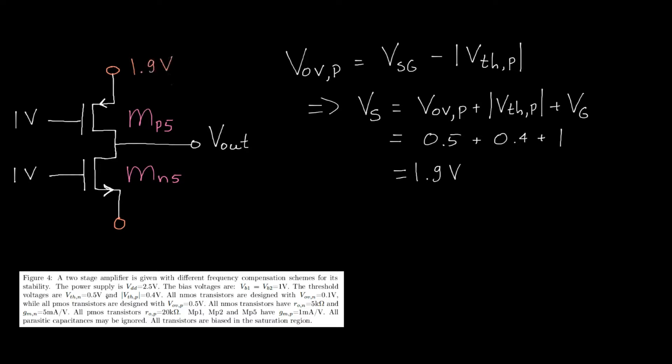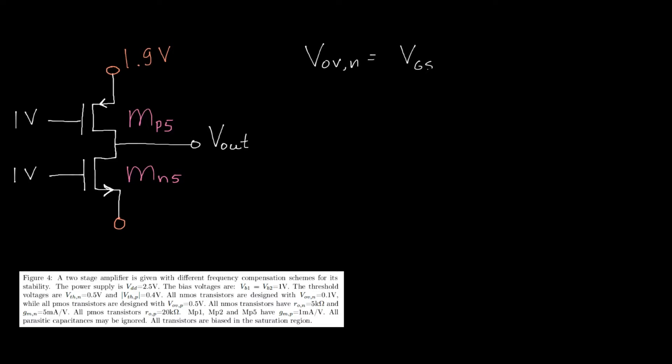And we can do the same thing for the source of the NMOS transistor. So let's do that. The overdrive voltage is the same as the gate source voltage minus the threshold voltage. And now we have to find the source voltage as the gate voltage minus the threshold voltage and the overdrive voltage.